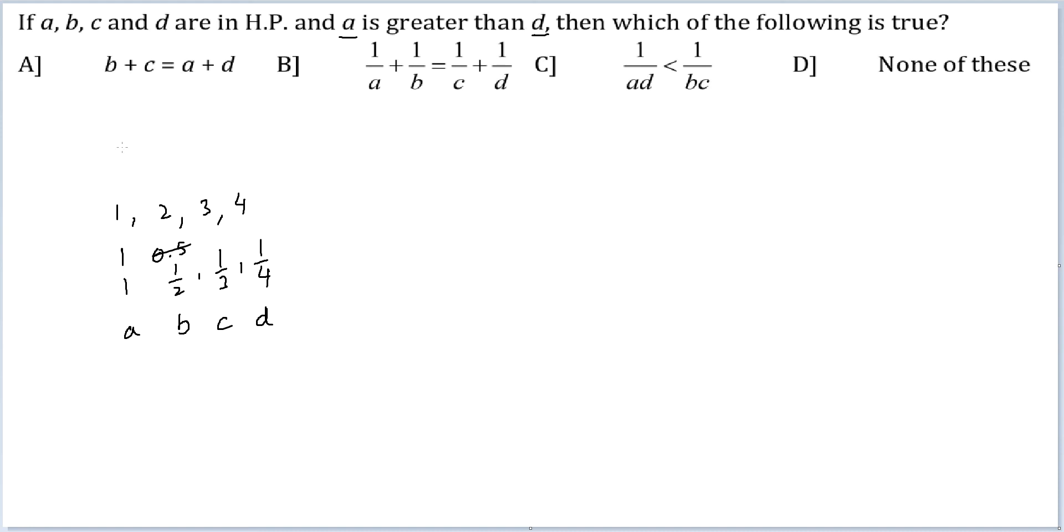That's D plus C, 1 by 2 plus 1 by 3 is 5 by 6, A plus D. This is not true. Let's go here, 1 plus 2 is equal to 3 plus 4. No, this is not true.